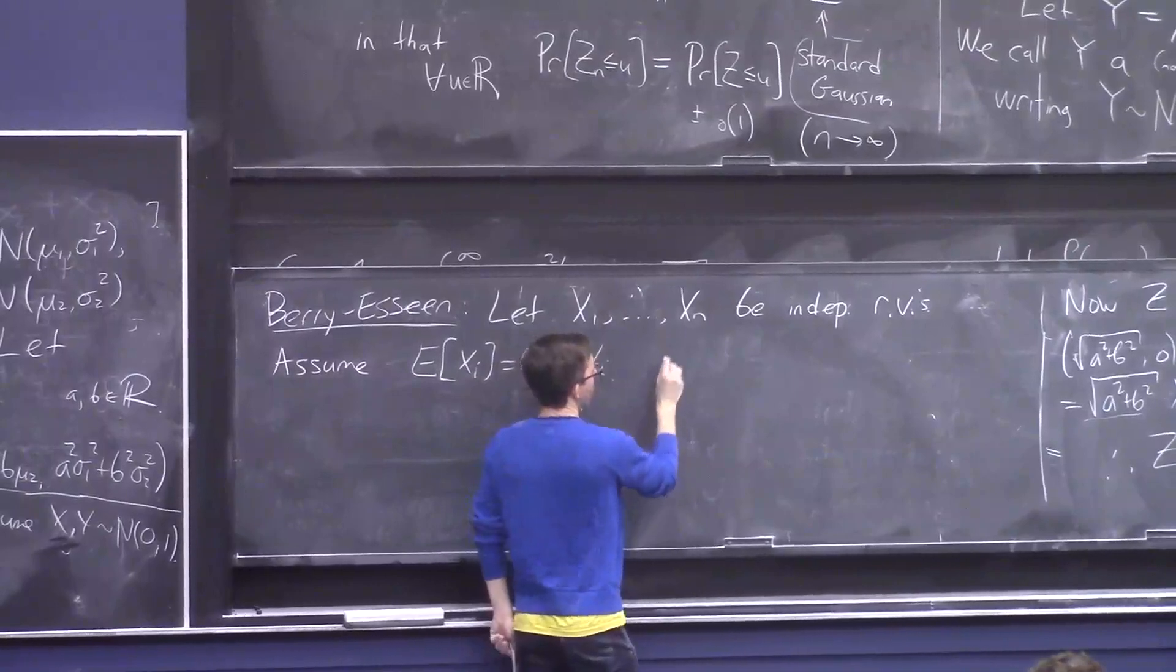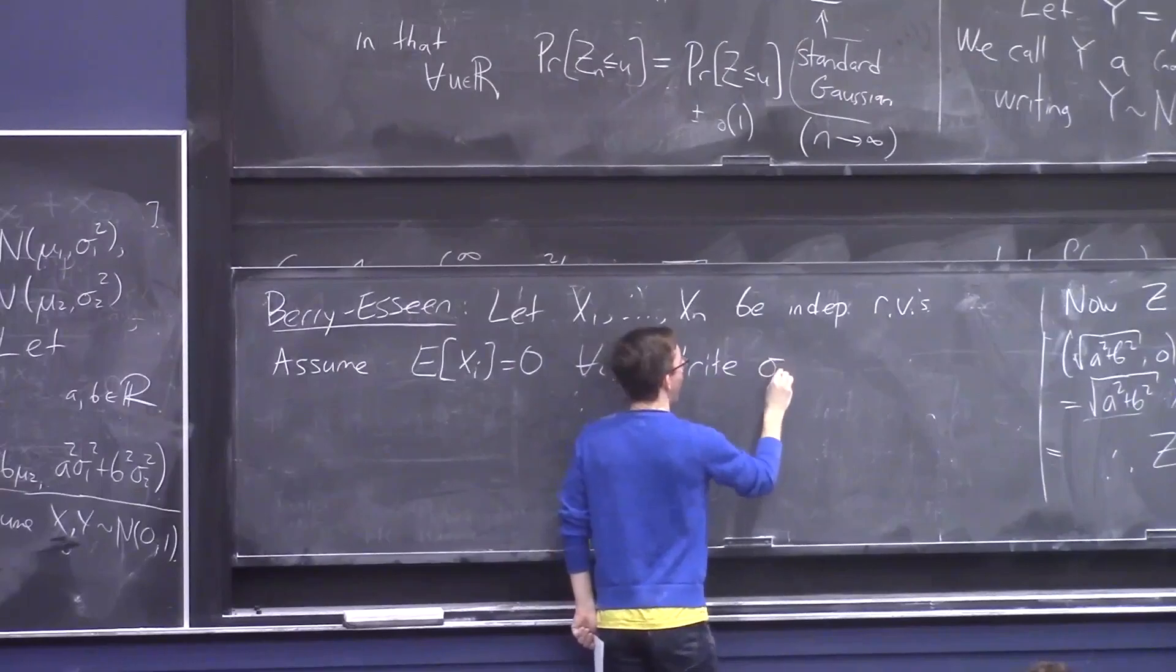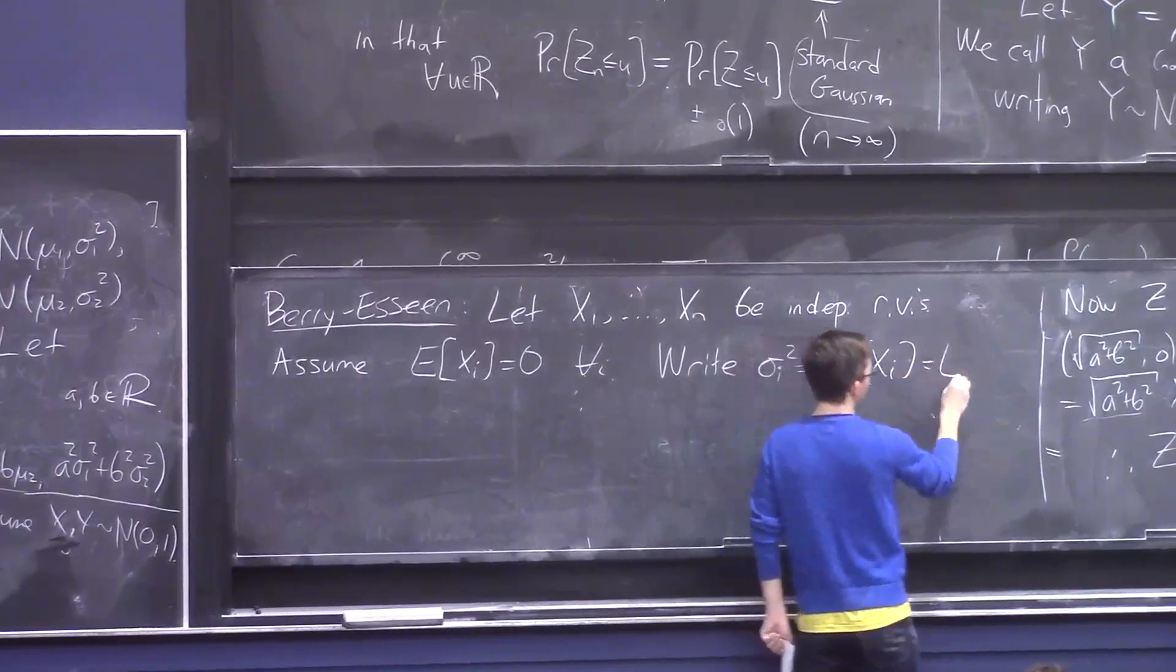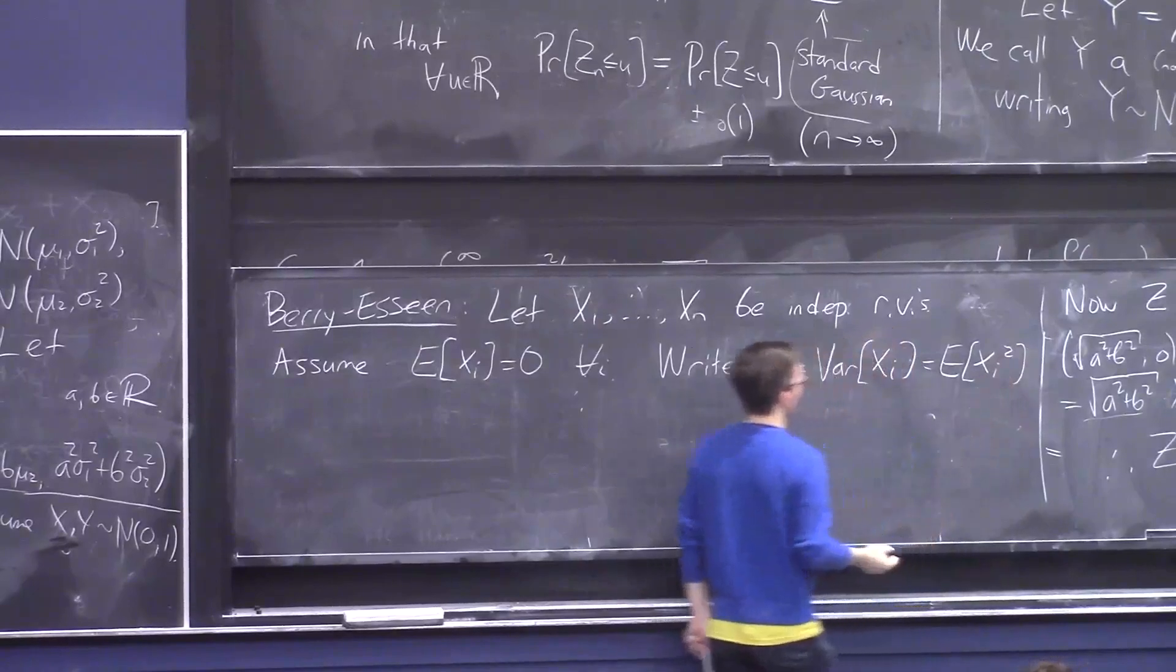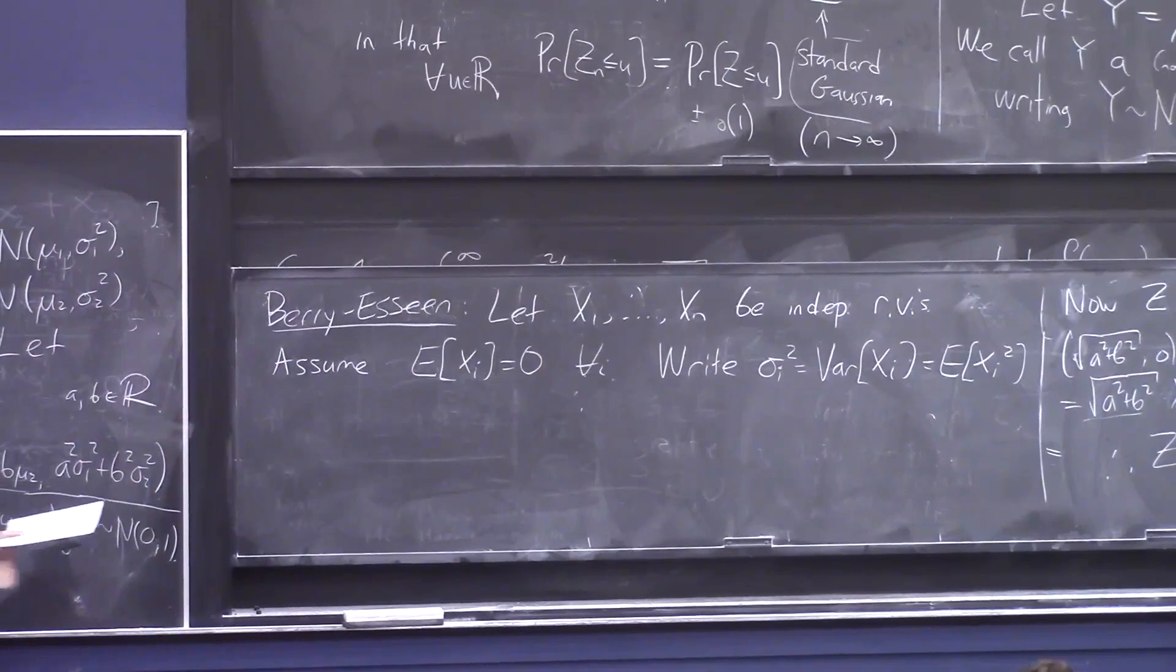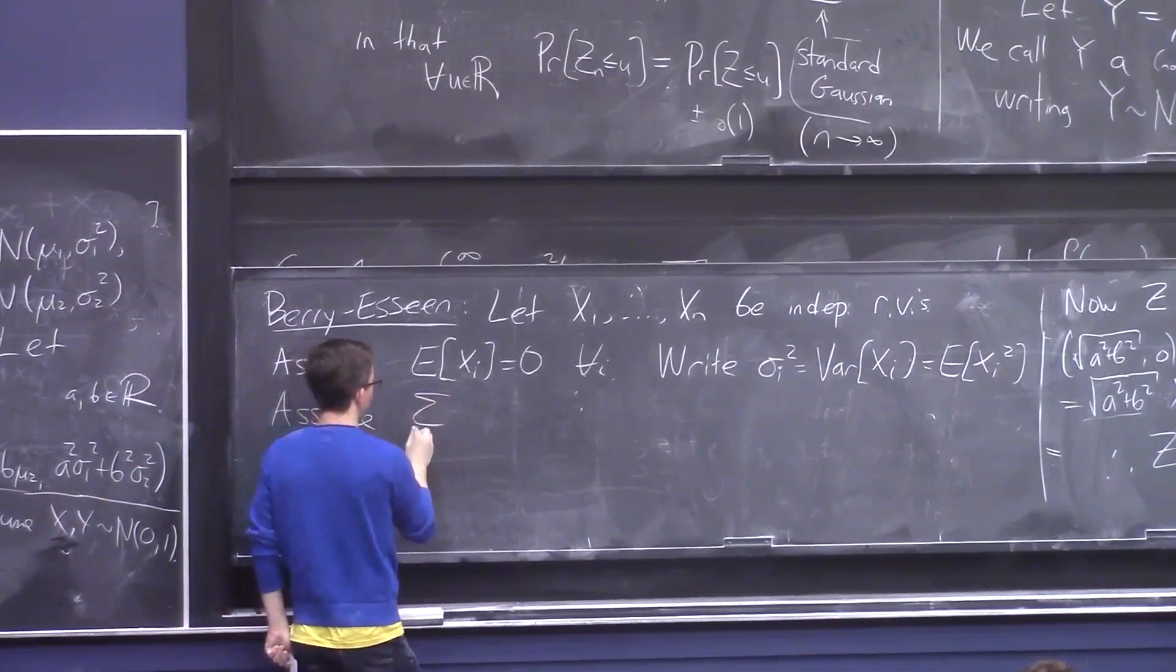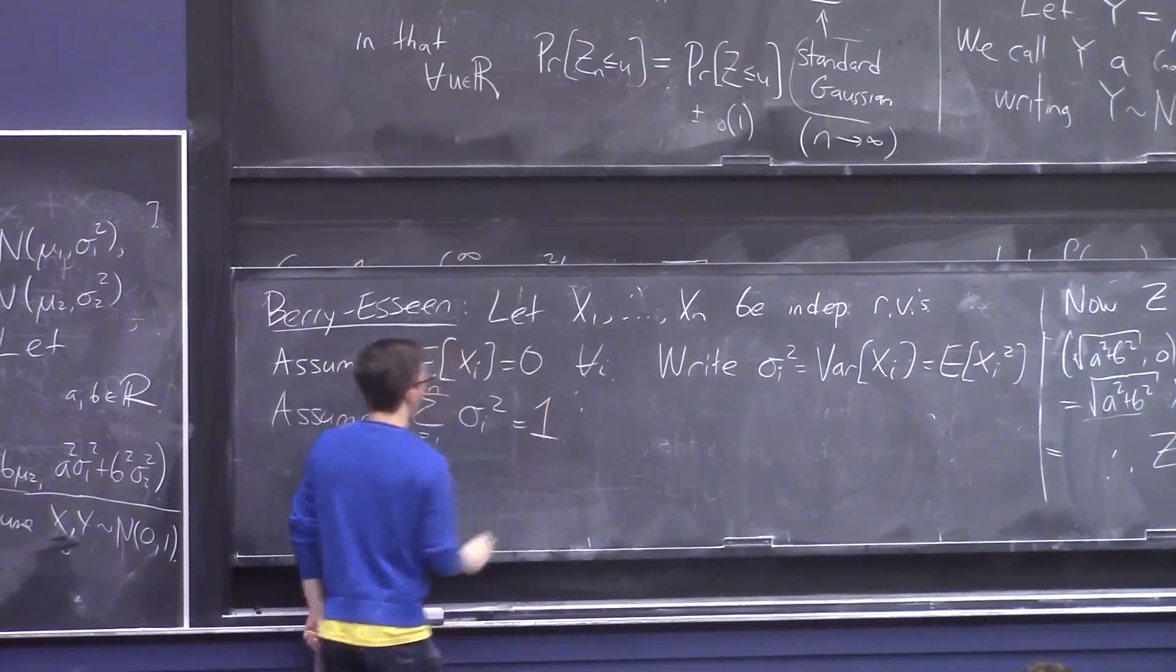And they don't even have to have the same variances, so we're going to introduce a separate letter for each of their variances. So we'll write σᵢ² for the variance of the i-th one, which equals also the expected value of Xᵢ², since we're already pre-assumed that the mean is zero for each of them. And we're going to assume that the sum of these variances is one.